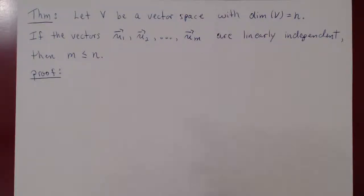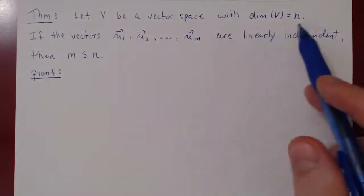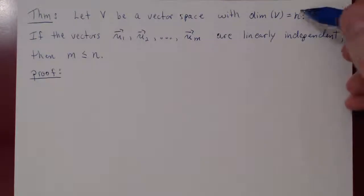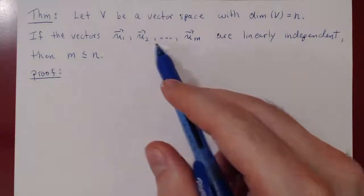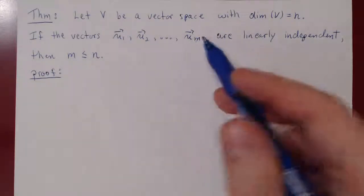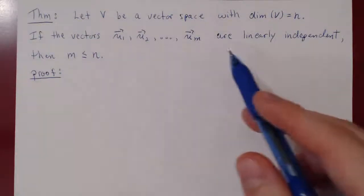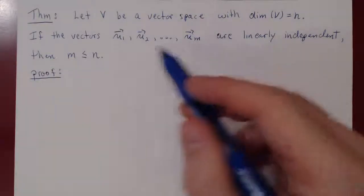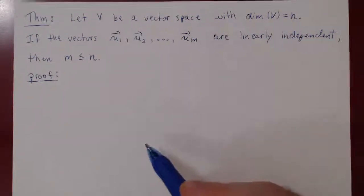In this video, we are going to prove the following theorem. Here are the assumptions: we let V be a vector space with dimension equal to n, so V is an n-dimensional vector space where n is some positive integer. If the vectors u1, u2, up to um — so those are m vectors from V — are linearly independent, then automatically m must be less than or equal to n, the dimension of the vector space.